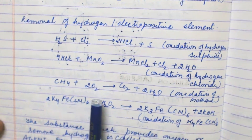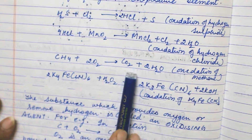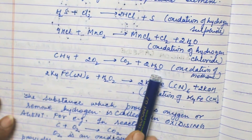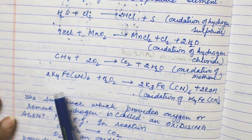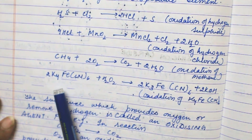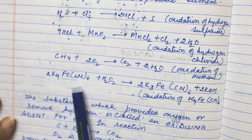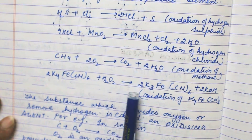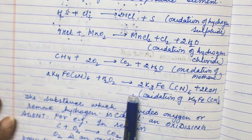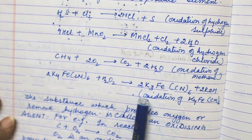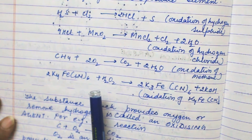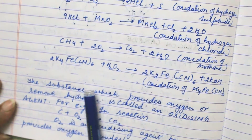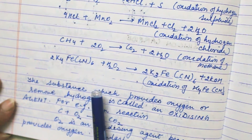Here methane gets oxidized with oxygen to form CO2 and water, so oxidation of methane takes place. Next is potassium ferrocyanide — oxidation of potassium ferrocyanide takes place in this reaction with the help of H2O2, that is hydrogen peroxide.